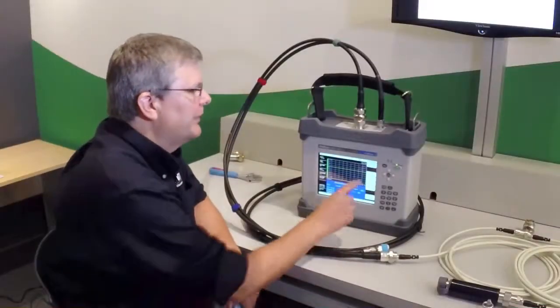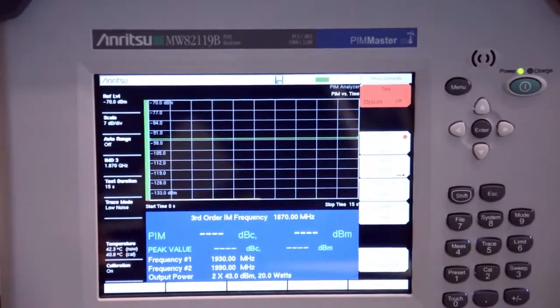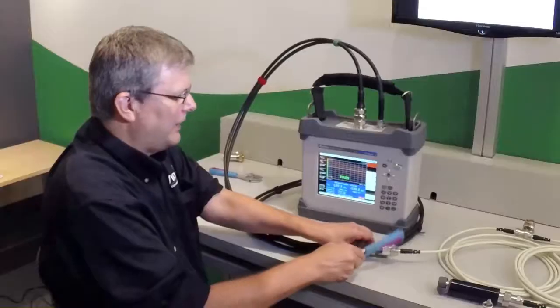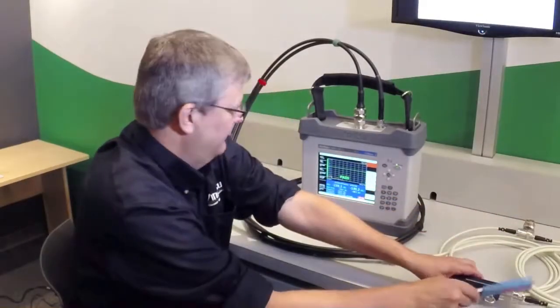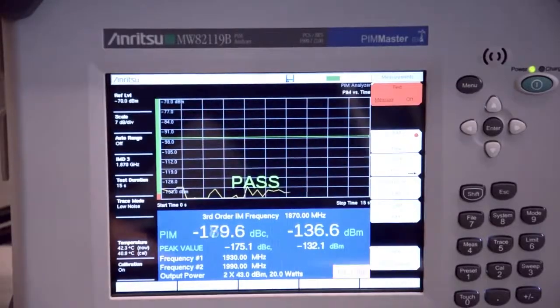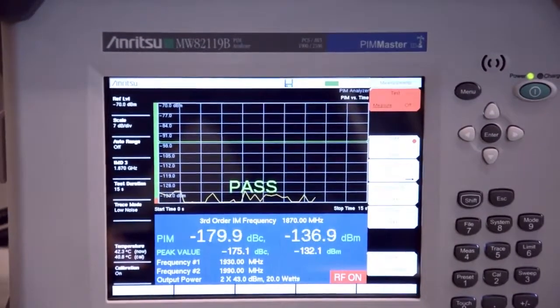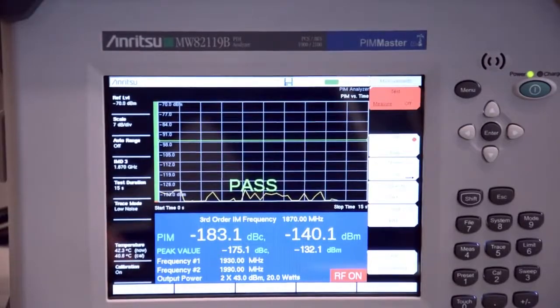So now that I've completed my PIM repair, I do my final PIM versus time measurement, while tapping on the connections. We now see that we have a stable PIM measurement even when applying the dynamic testing. This is now a passing result.